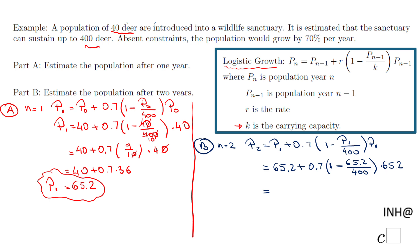You can use 65.2 plus 0.7 and then times by that parenthesis. Be sure you put it the correct way in your calculator. I end up with 103.4.